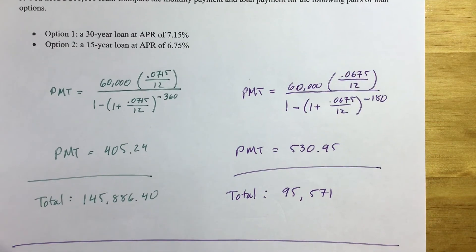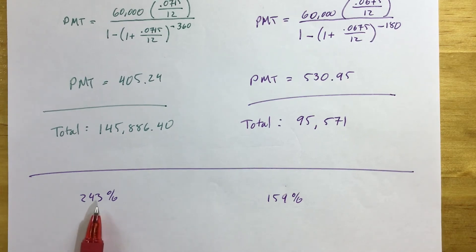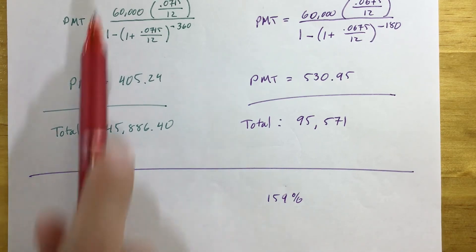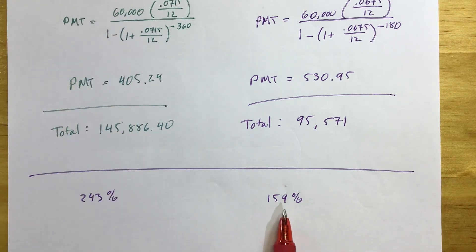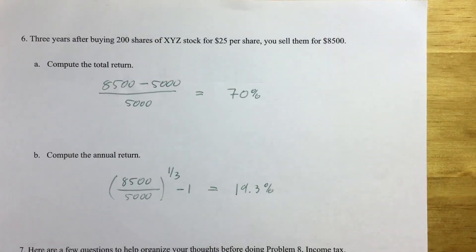I'll leave you with one more thing from this problem: two percentages — 243% associated with option one, and 159% associated with option two. See if you can figure out what those numbers represent.